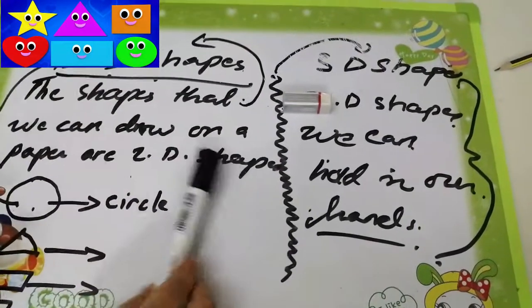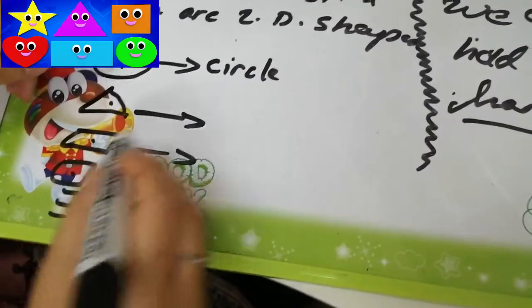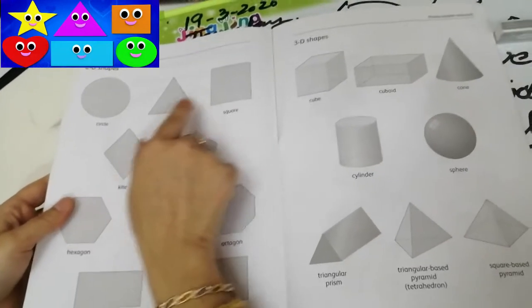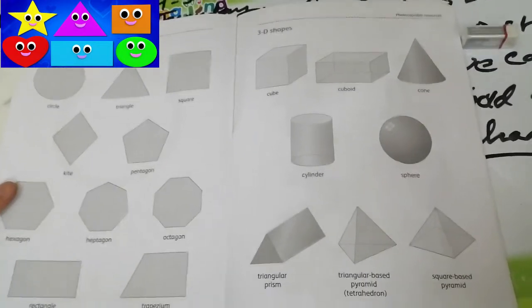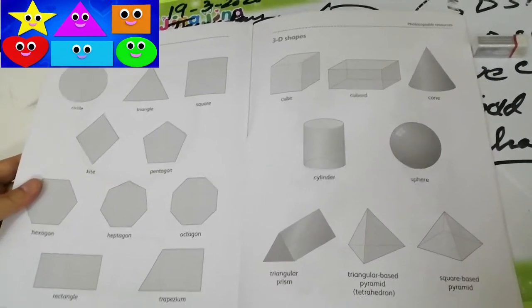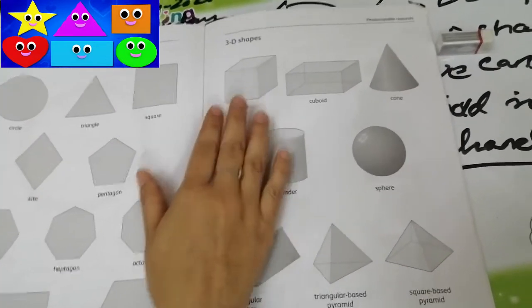The first example of 2D shape is circle, then triangle, then rectangle, then square and many more. You can see the book page. These are the examples of kite. Ever you fly the kite in the sky? Very high. Very good boys, mashallah. So these are the examples of 2D shapes and these are the examples of 3D shapes.